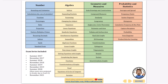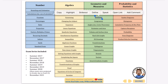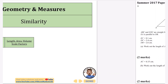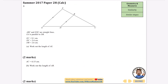In this video I'm going to be doing every exam question that has ever been asked on similarity. The document is linked in the description and it's fully hyperlinked. I'm going to start off with just similar shapes for this one, and then I'll do length, area, and volume scale factors — you'll see why they feel quite different to each other.